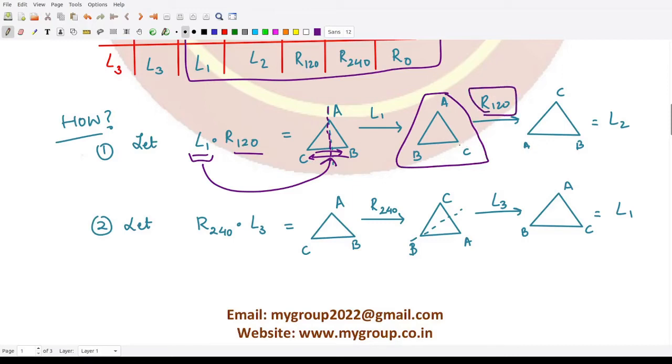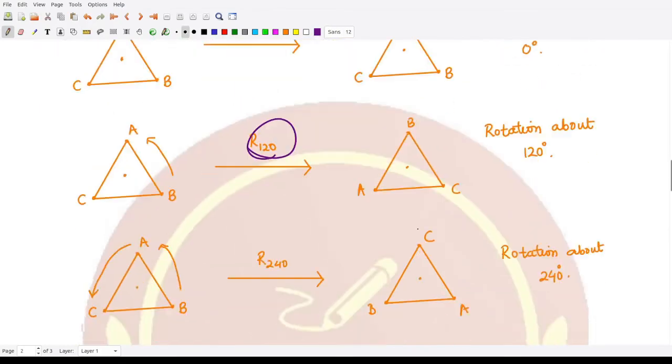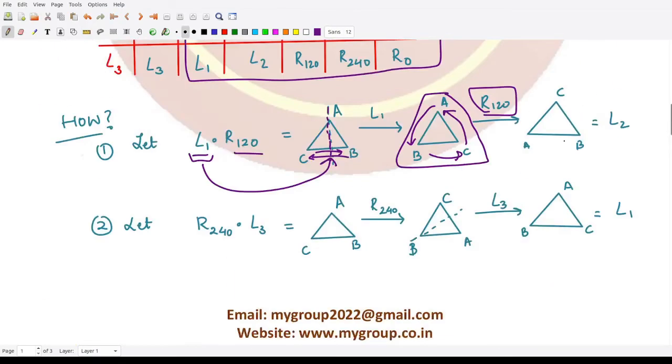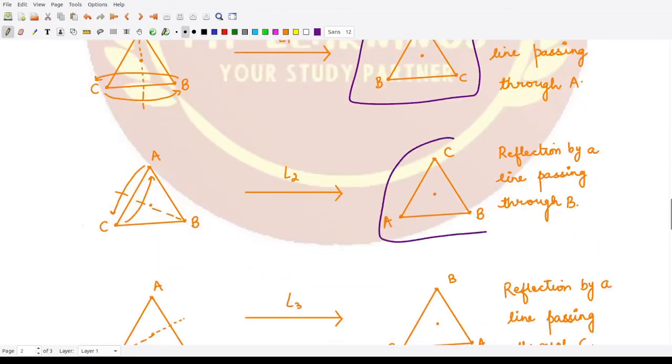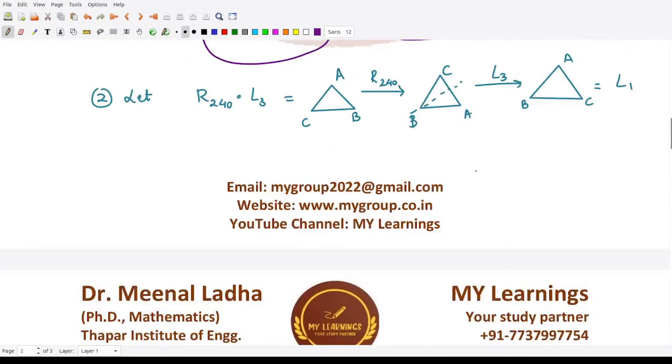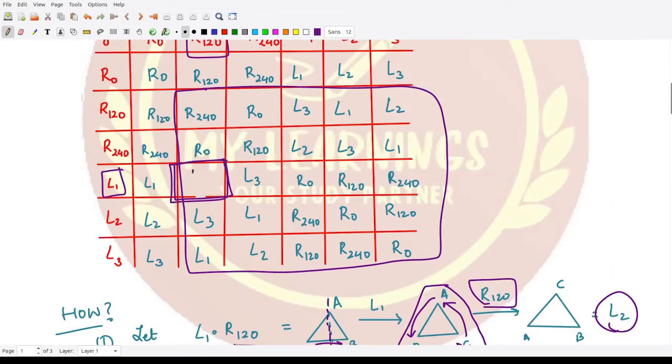It would shift C to the place of A, A to the place of B, and B to the place of C. So we would have CAB. Now, what is CAB? Our triangle is CAB, so this is L2. The answer is L2, so we will write L2 here.